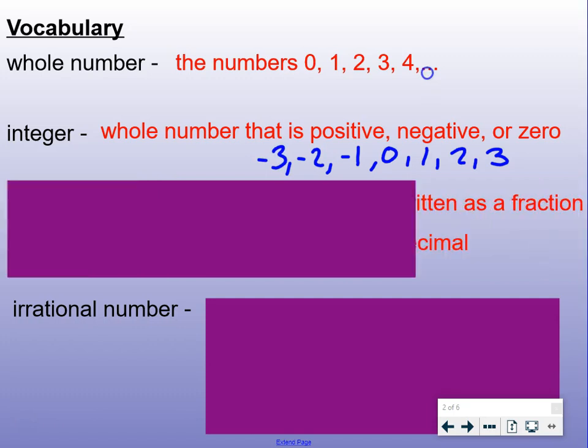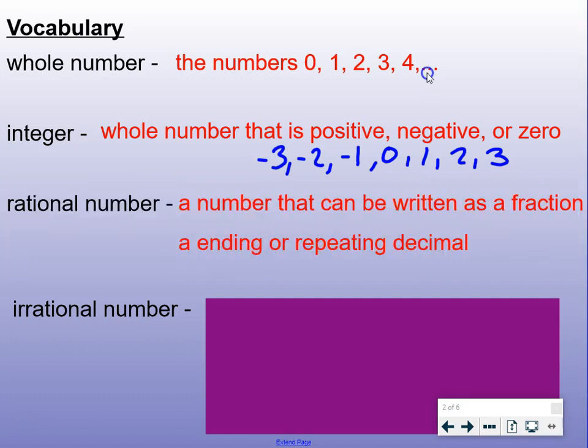Rational numbers: a number that can be written as a fraction, like one-half or three-fourths. Those are rational.